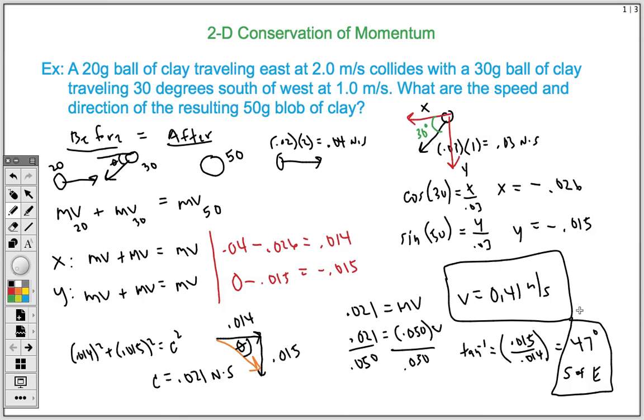So hopefully using this as an example problem, you'll be able to solve for your own two-dimensional conservation of momentum problems. Just remember that the only difference is you have an angled vector, so you have to break it into its x and y components. Thank you for watching.